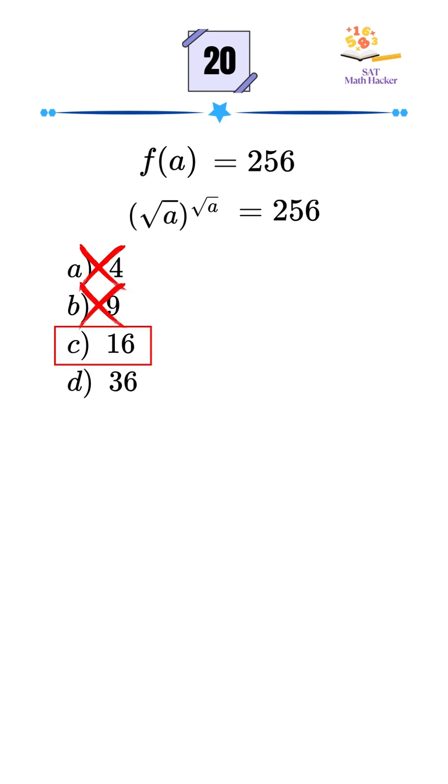Now try a equals 16. Square root of 16 equals 4, and 4 to the 4th equals 256. That's a match. So the correct value of a is 16, which is option C.